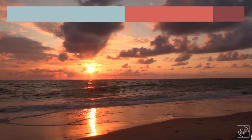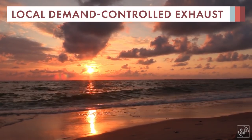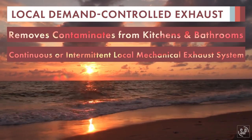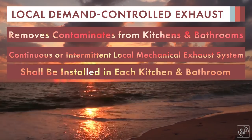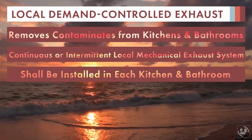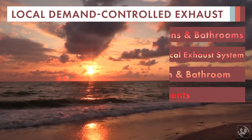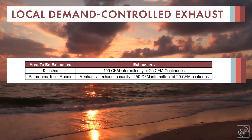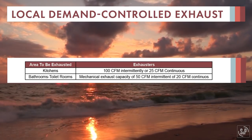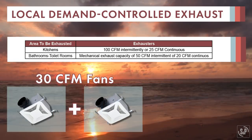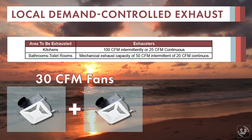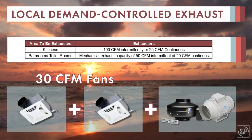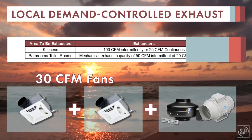The second basic requirement, local exhaust, is intended to remove contaminants from kitchens and bathrooms. A continuous or intermittent local mechanical exhaust system shall be installed in each kitchen and bathroom and meet the CFM requirements in this table. Remember, the local exhaust fans do count towards the whole house ventilation requirement. For this example, two 30 CFM bathroom exhaust fans running continuously would meet the ventilation requirement, in addition to a 100 CFM intermittent range hood in the kitchen.